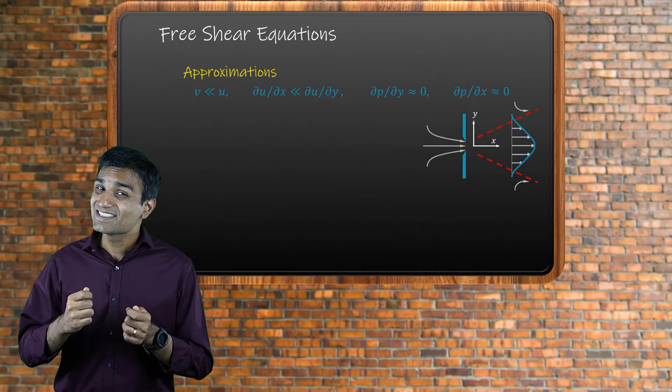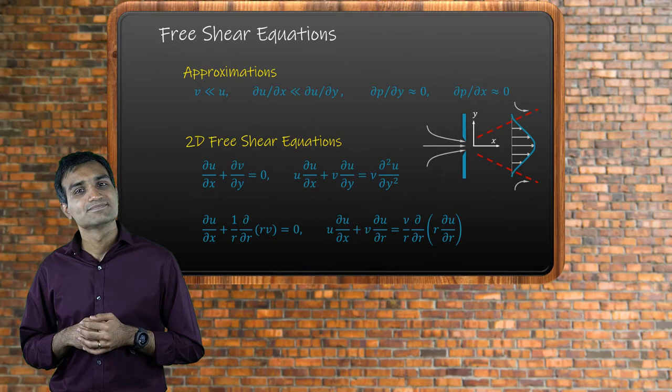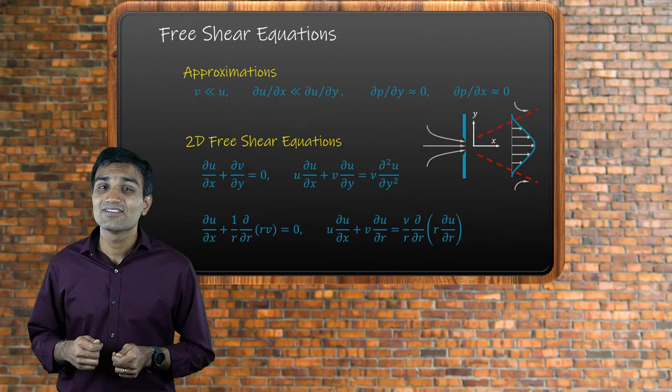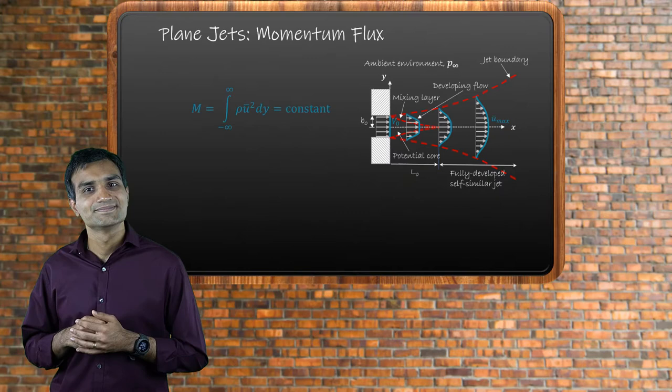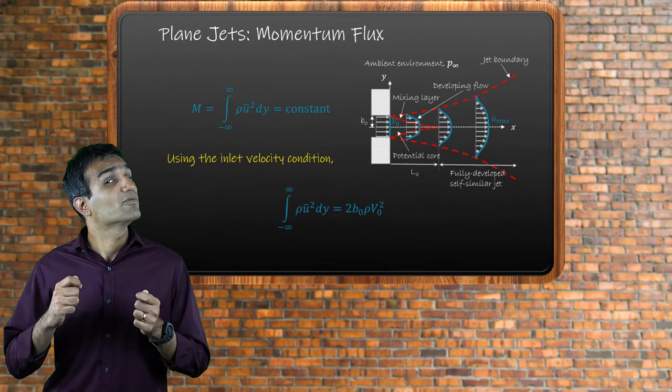Following these approximations, a simplified set of equations are obtained in both 2D and axisymmetric forms. As the jet spreads at a constant pressure, the momentum flux at every cross-section in this region is always a constant. This can be evaluated from the constant inlet velocity profile to obtain the following relationship. The obtained value of the momentum flux is applicable in both laminar and turbulent flow regimes.